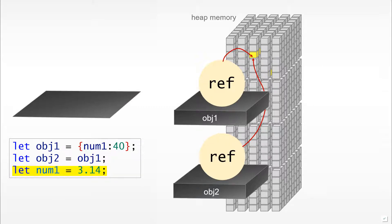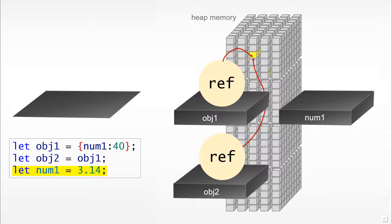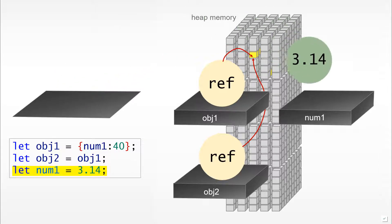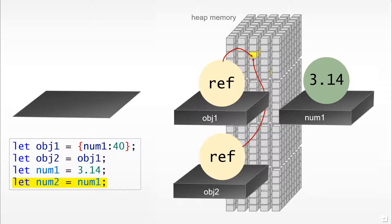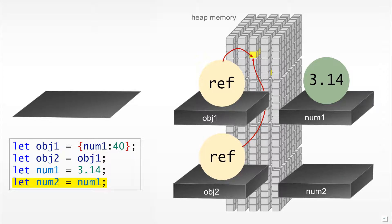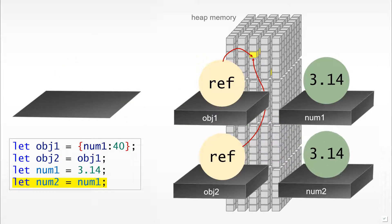Now what if we add a third line of code: let num1 equal to 3.14? We will define a third variable called num1, generate a numeric value, and place it on the num1 variable. If we then add a fourth line of code — let num2 equal to num1 — we are copying the value of num1 into a new variable. We define a new variable, generate a new numerical value, and place it in the num2 location. Notice that we are not referencing anything; num1 and num2 at the moment contain the same value but are completely separate from one another.